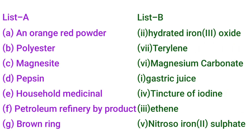Summary of matches: Number 5 — Potential answers include an orange-red powder, which is hydrated iron(III) oxide. Polyester — Terylene. Magnesite — Magnesium Carbonate. Pepsin — Gastric Juice. Household Medicinal — Tincture of Iodine. Petroleum Refinery By-product — Ethyne. Brown Ring — Nitrous ion iron(II) sulfate.